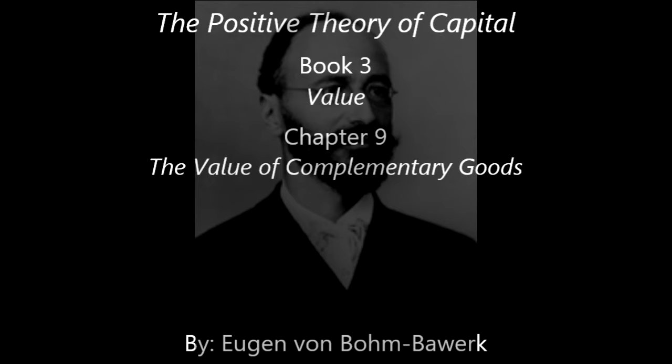Cases of this kind are relatively scarce in practical life. Second, and more common, is the case where the individual members of the group can afford another, though a less, utility outside their joint employment. Here, the value of the single member does not lie between everything and nothing, but between the amount of the marginal utility which it is capable of affording in isolation as minimal, and the amount of the joint marginal utility after deducting the isolated marginal utility of the other members as maximum.